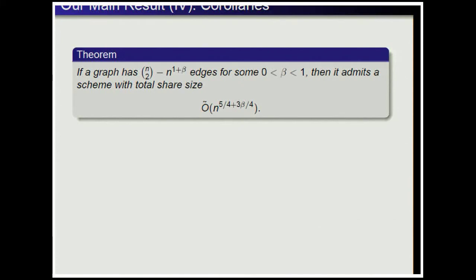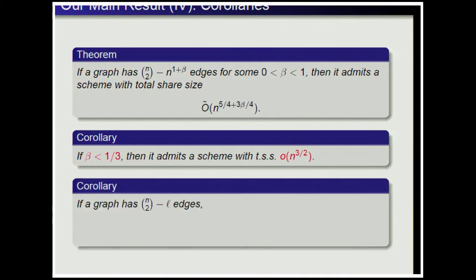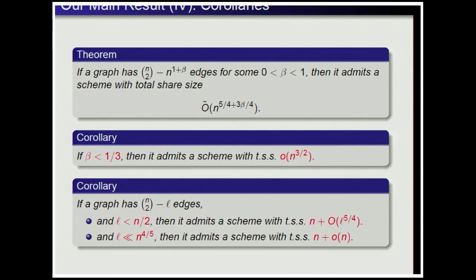There are direct corollaries of the main result. If a graph has N-choose-2 minus N to the 1+β edges for some β smaller than 1/3, then the graph admits a scheme with total share size small-o of N to the 3/2. Also, if a graph has N-choose-2 minus L edges and L is smaller than N over 2, then it admits a scheme with total share size N plus big-O of L to the 5/4.